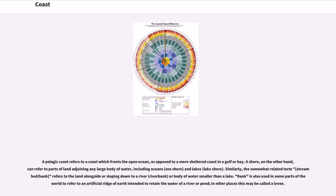Similarly, the somewhat related term streambed or bank refers to the land alongside or sloping down to a river, or body of water smaller than a lake. Bank is also used in some parts of the world to refer to an artificial ridge of earth intended to retain the water of a river or pond; in other places this may be called a levy.